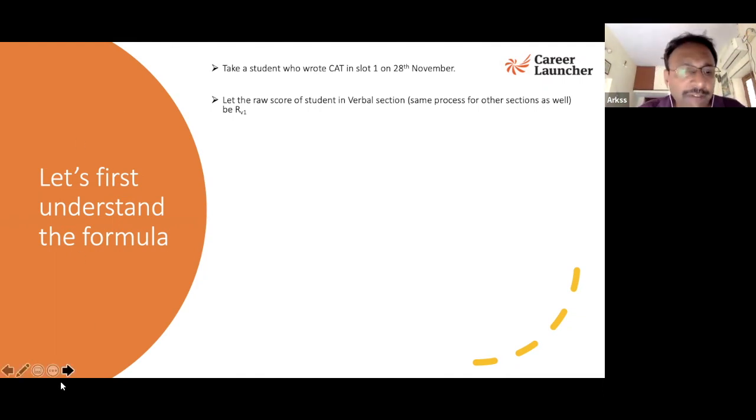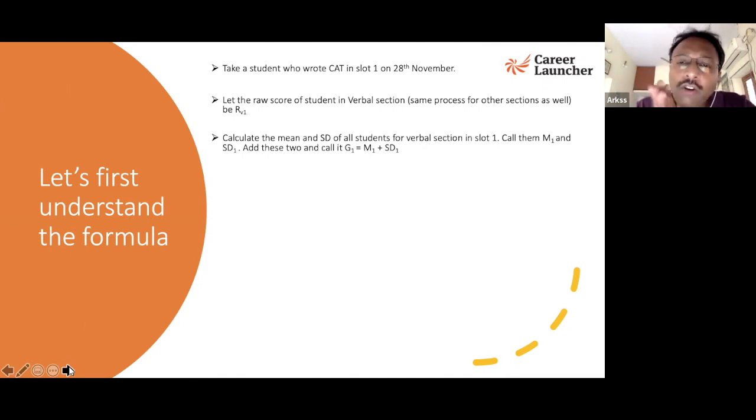What happens if we calculate the mean and the standard deviation of all the students for verbal section in slot one? You're not going to do that by the way, you will not know this. But what the IIMs do, I'm going to put it up very simply on your screen. Let's say that you calculate the mean and the standard deviation of all the students for verbal section in slot one. Call them some M1 and SD1. You will get if you add the two of them some number called G1.